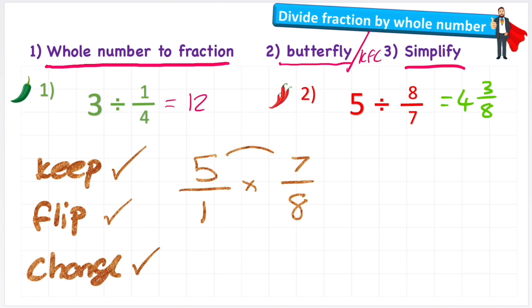5 times 7 is 35. 1 times 8 is 8. Again improper. So to convert it to a mixed number, I need to find out how many whole 8s are in 35. And we agreed that there are 4 with 3/8 remaining. Same answer.